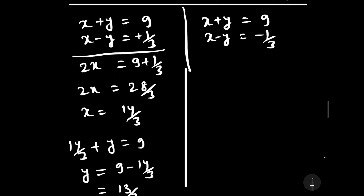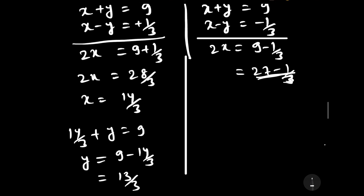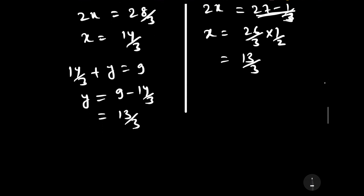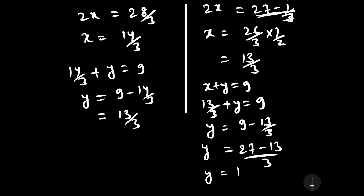For the second case, x + y equals 9 and x − y equals −1/3. Adding: 2x equals 9 − 1/3 equals 26/3, so x equals 13/3. Substituting: 13/3 + y equals 9, so y equals 9 − 13/3 equals 27/3 − 13/3 equals 14/3.